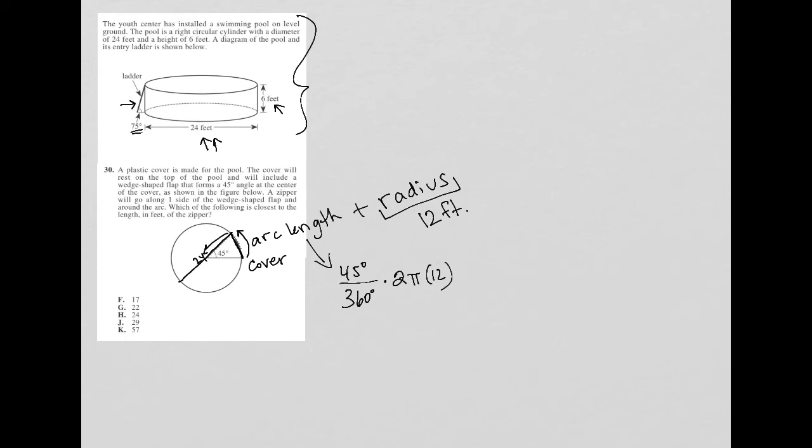So let's simplify this. 45 divided by 360, well, 45 goes into 45 once, 45 goes into 360 eight times. So I have 1/8. And then 2π times 12 equals 24π.